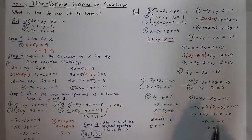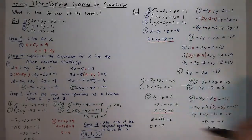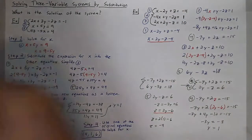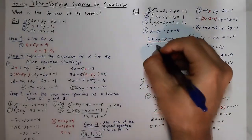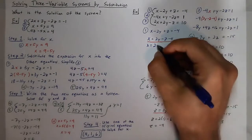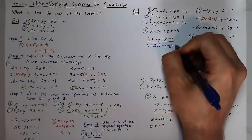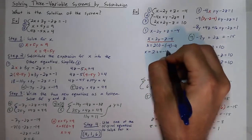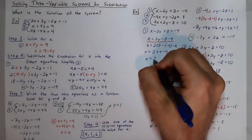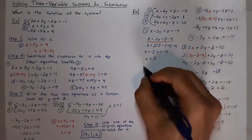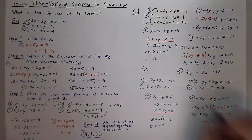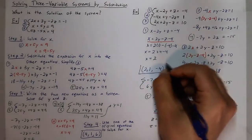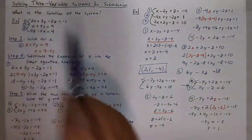Now I can go back and plug y and z into the x equation to figure out what x is equal to. That's x equals 2 times 1 minus negative 4 minus 4, so x equals 2 plus 4 minus 4, meaning x is equal to 2. My solution is (2, 1, negative 4). And that is how you solve three variable systems by substitution.